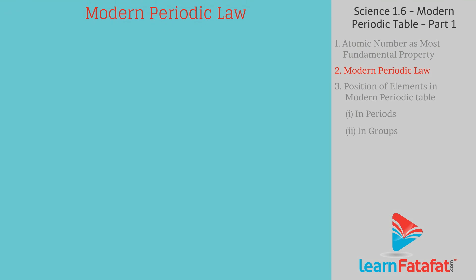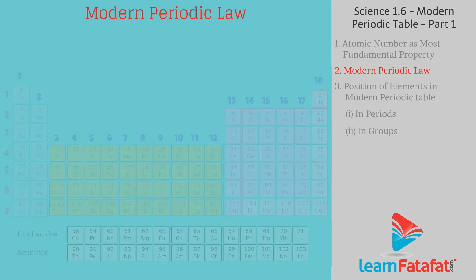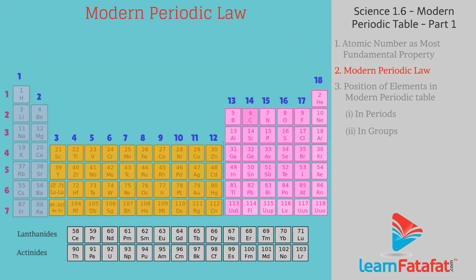Modern Periodic Law states that the chemical and physical properties of elements are a periodic function of their atomic numbers. The Periodic Table developed based on Modern Periodic Law is called Modern Periodic Table.